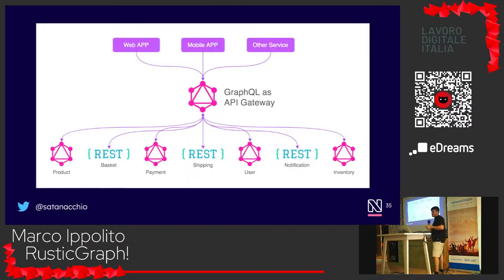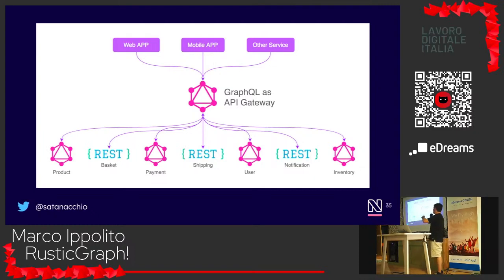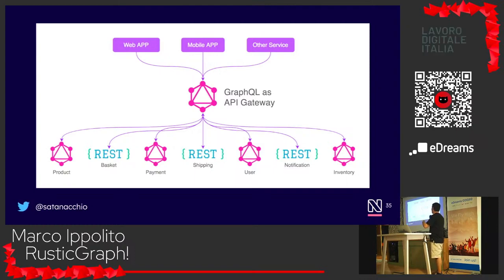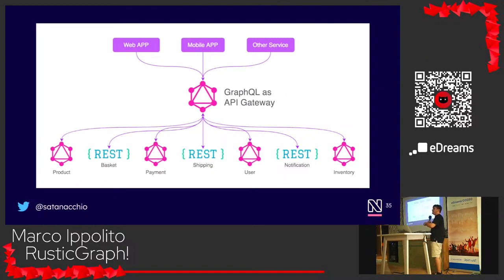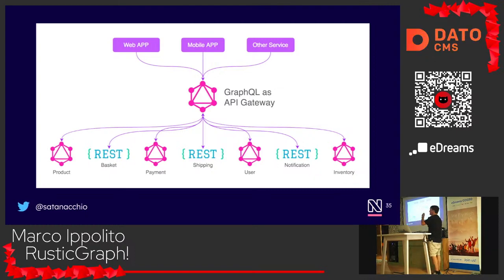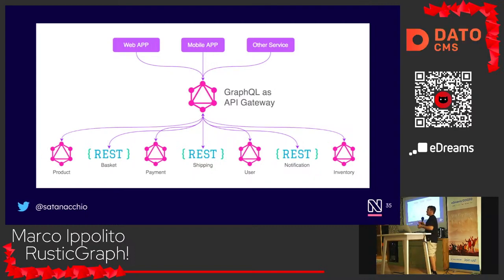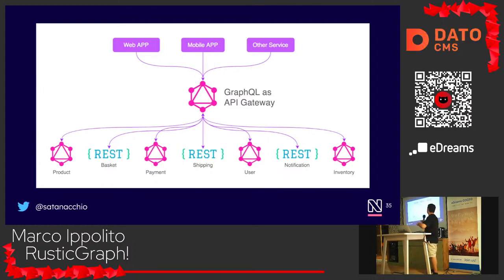This is what a federation looks like. You have your front-end, a gateway — very similar to a normal REST gateway — and your underlying federated services. Those can be GraphQL services or also REST services, because it doesn't matter to the gateway. For the gateway, everything is a resolver. It knows where to retrieve the data, whether it's a REST API, a database, or another GraphQL service, and this lets you build your architecture in many different ways.